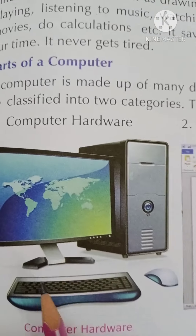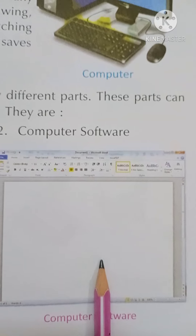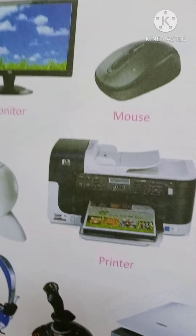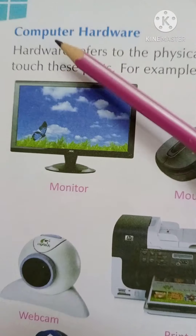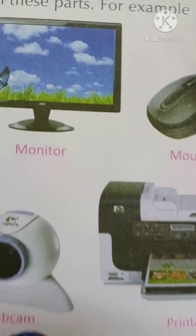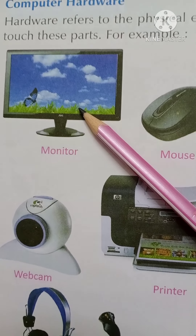Parts of a computer. Computer has two parts. First is computer hardware and second is computer software. Now, computer hardware refers to the parts which we can touch.